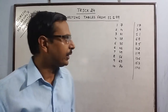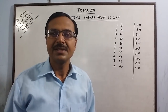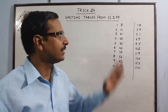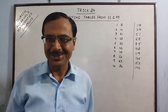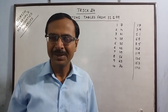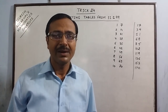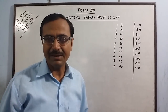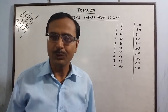You don't need to do any kind of multiplications, successive additions — nothing. Just write the tables of the single digits and follow this procedure. Isn't that very interesting and very simple? If students are asked to write tables like this from the basic level, I don't think they are going to face any problem in future.